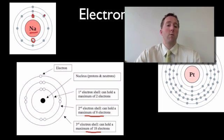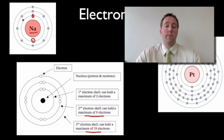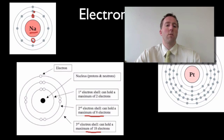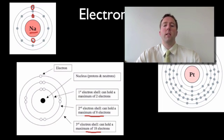With two electrons in the first shell, the next electrons go into the second shell: that's 3, 4, 5, 6, 7, 8, 9, 10 — so eight electrons in the second shell, which is now full. Then the 11th electron of sodium goes into this third outer shell. So electrons exist in shells, and each shell can only hold a certain number.